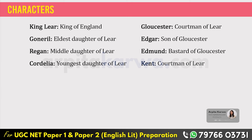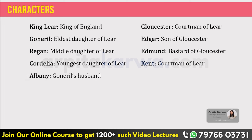There are two other characters: Goneril's husband Albany, who is a very kind man, and Regan's husband Cornwall, who is a very cunning man.